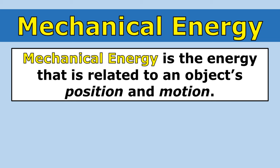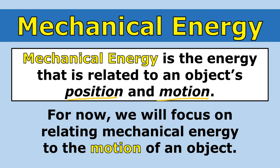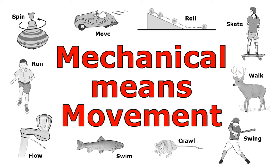Mechanical energy is the energy that is related to an object's position and motion — the location of an object and how it is moving. For now, we will focus on relating mechanical energy to the motion of an object. Mechanical means movement. If you see something moving — spinning, rolling, walking, running, swimming, or crawling — mechanical energy is involved.